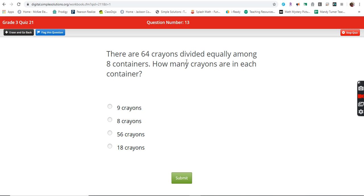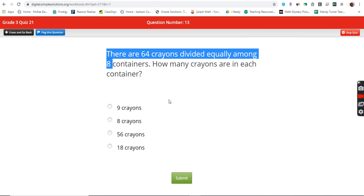There are 64 crayons divided equally among eight containers. How many crayons are in each container? 64 divided by eight. Eight times what is 64? Eight times nine is 72. Eight times eight is 64. We know it's not going to be eight times 56 or eight times 18. Eight times eight is 64.